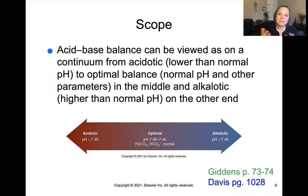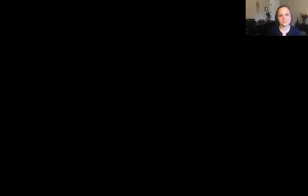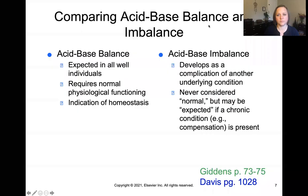Anything less than 7.35 is considered acidic, and anything greater than 7.45 is considered alkalotic or alkaline. Not only will pH be normalized at 7.35 to 7.45, but carbon dioxide and bicarbonate will also have normal levels. Acid-base balance is considered the norm in a well individual and is required for normal physiologic functioning — it indicates homeostasis.